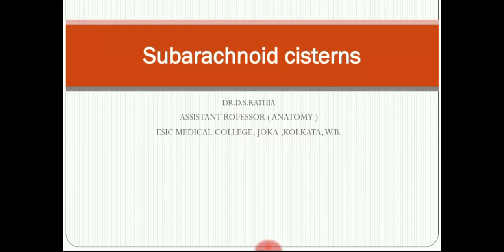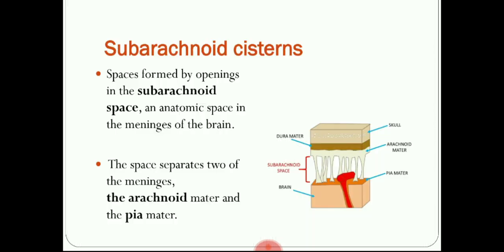Welcome to my class on the subarachnoid cisterns. I am going to tell you in detail about the cisterns. First, what are the cisterns and what is the meaning of this term? Cisterns are nothing but dilated subarachnoid spaces — spaces around the brain. They are anatomical spaces at certain locations in the brain region.